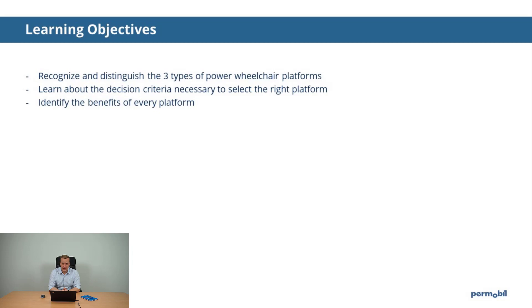There are three learning objectives for today. The first one is to recognize and distinguish the three different power wheelchair platforms. You'll also learn about the decision criteria that are necessary when selecting the right platform, and you'll also be able to identify the benefits of each and every platform.